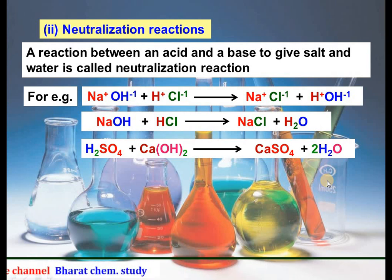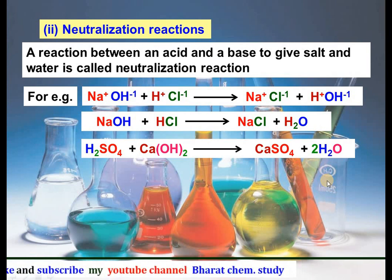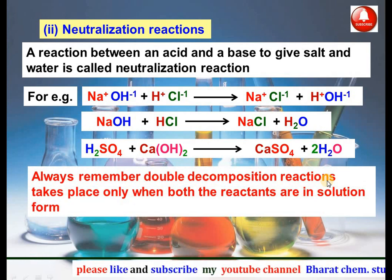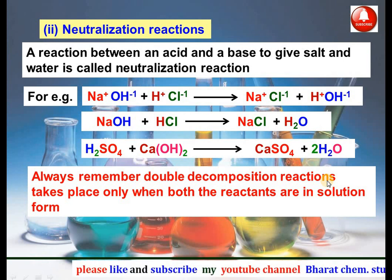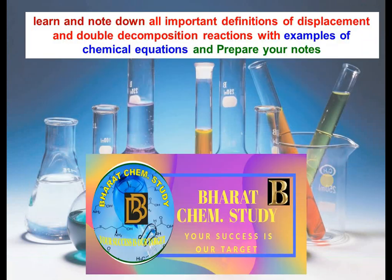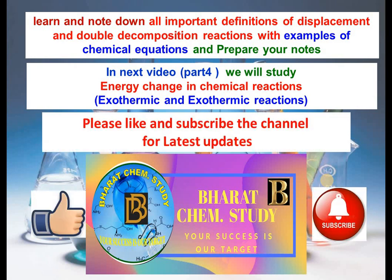Always remember: precipitation reaction and neutralization reaction are both examples of double decomposition reaction. Double decomposition reaction takes place only when both reactants are in their solution form; if they are in solid form no reaction will take place. Learn and note all the important definitions of displacement and double decomposition reactions with examples and chemical equations. In the next video, Part 4, we will study energy changes in chemical reactions — exothermic and endothermic reactions. Please like and subscribe the channel for the latest updates. Thank you.